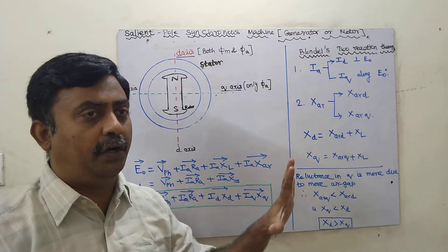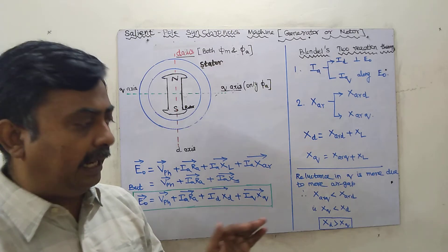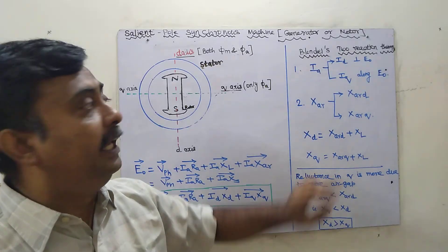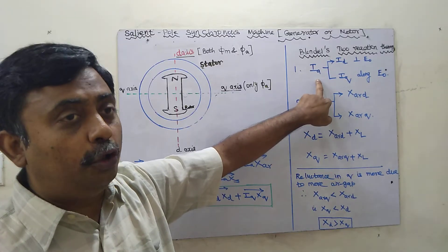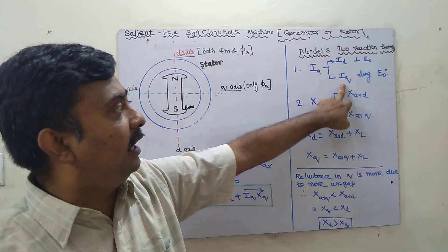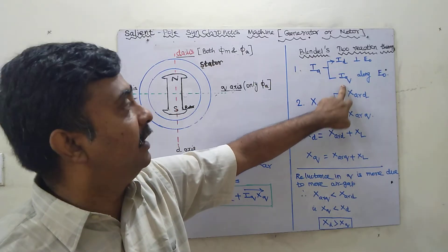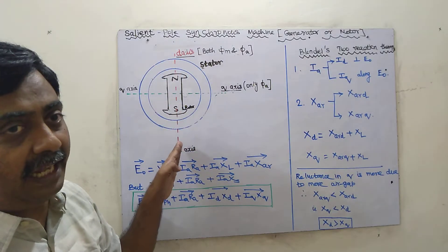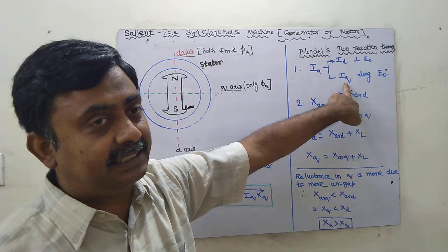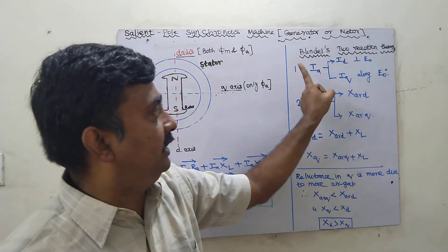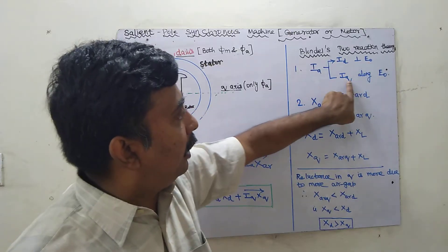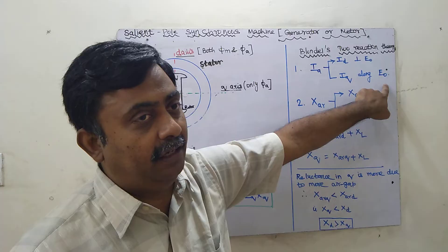Since the flux is not uniform, we need a different method to analyze this, which was proposed by Blondel — the two-reaction theory. Blondel divided the armature current into two parts: direct axis current (ID) and quadrature axis current (IQ). The direct axis current ID is perpendicular to the open circuit voltage E0, and the quadrature axis current IQ is along with E0.